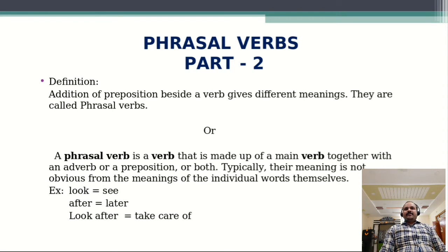In other words, a phrasal verb is a verb that is made up of main verb together with an adverb or a preposition or both. Typically, their meaning is not obvious from the meanings of the individual words themselves. We have seen the example in the last class, so I am not going to repeat the same thing now.